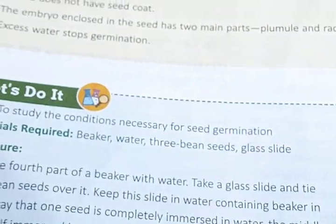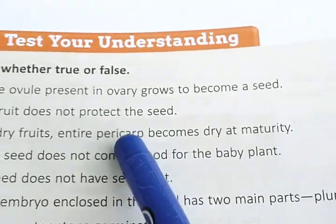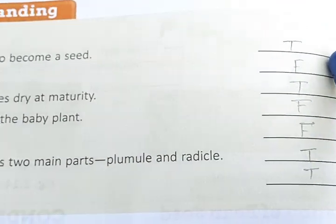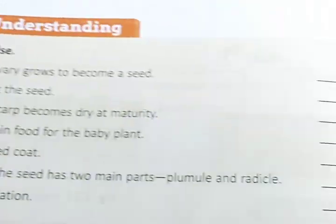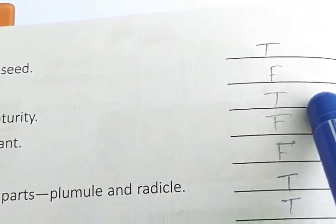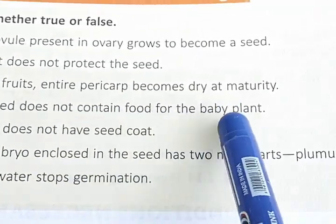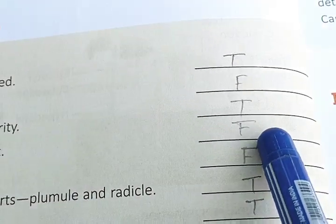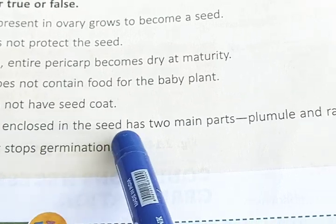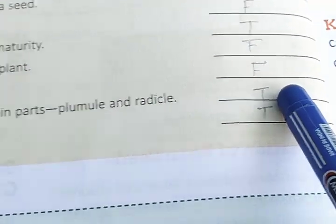Now I will discuss true or false. The ovule present in the ovary grows to become a seed — true. A fruit does not protect the seed — false. In dry fruits, the entire pericarp becomes dry at maturity — true. The seed does not contain food for the baby plant — false. A seed does not have a seed coat — false. The embryo enclosed in the seed has two main parts, plumule and radicle — true. Excess water stops germination — true.